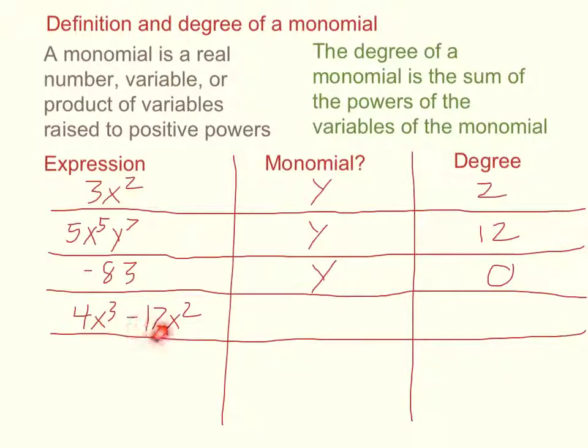How about this expression? We have 4x cubed minus 17x squared. Now, that actually is not simply a product, because there's a subtraction here. So that's not going to be a monomial, and it doesn't make sense to talk about its degree.